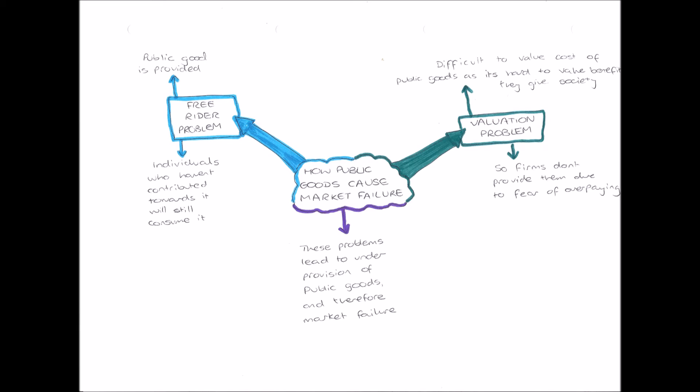Because private companies don't know exactly how much to value or pay for these public goods, they won't provide them. Both the free rider problem and the valuation problem lead to the under-provision of public goods. With the free rider problem, if people know that some won't pay but will still consume the good, the public good will not be provided, leading to under-provision and market failure. With the valuation problem, because businesses don't know if they're overpaying or underpaying, they won't provide the good at all — so again there is under-provision and market failure.